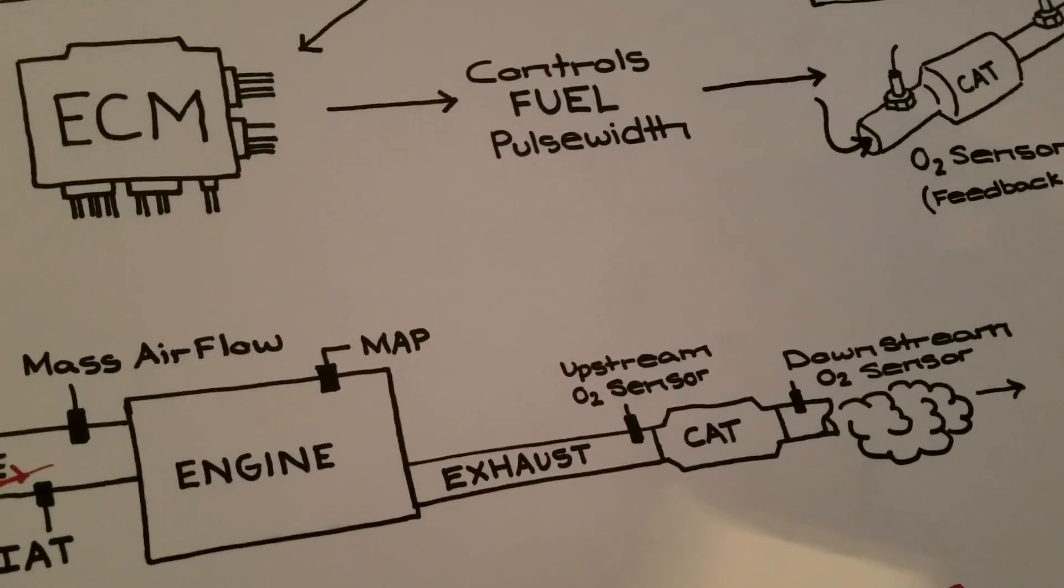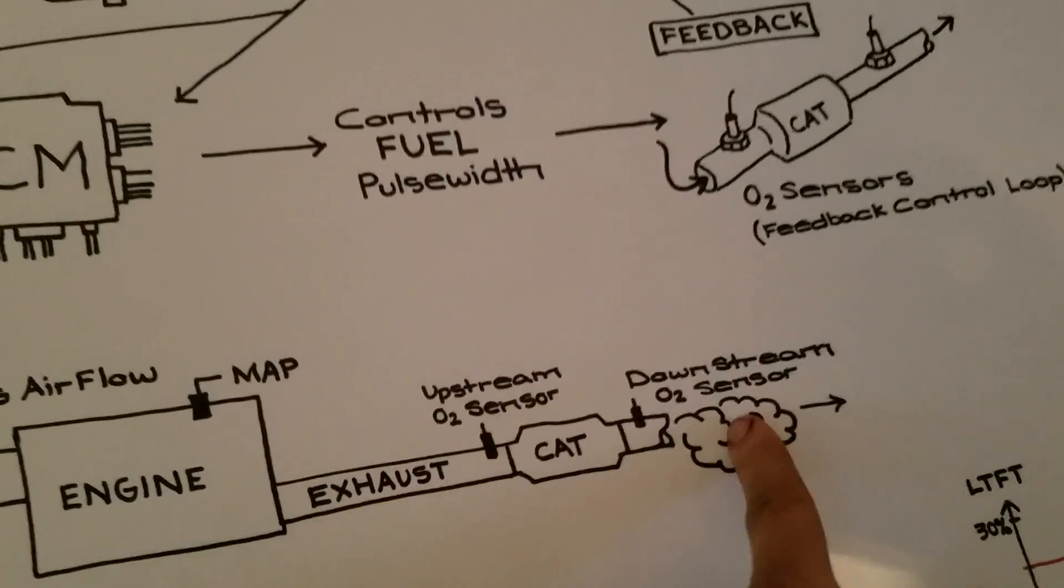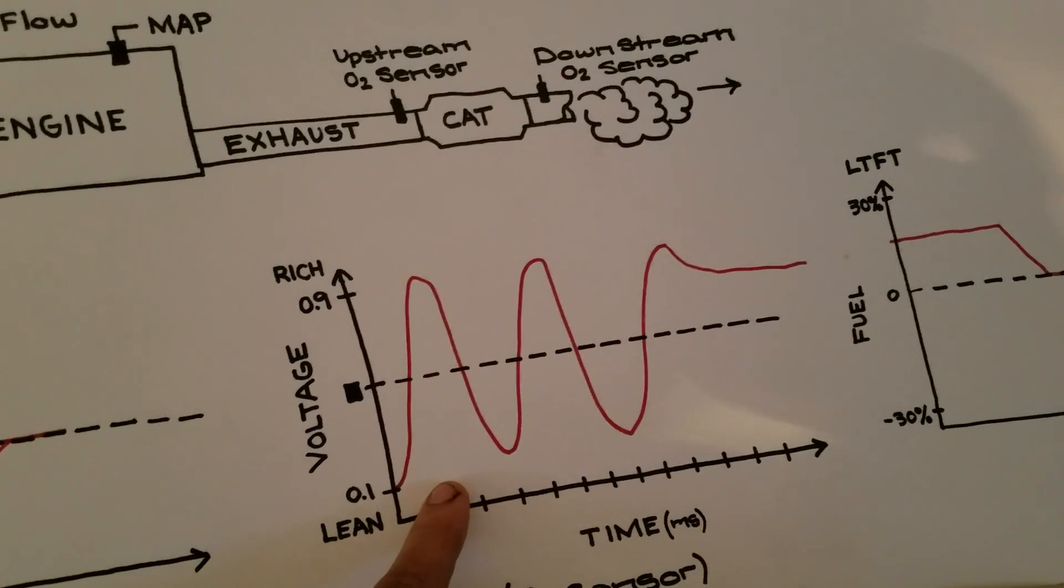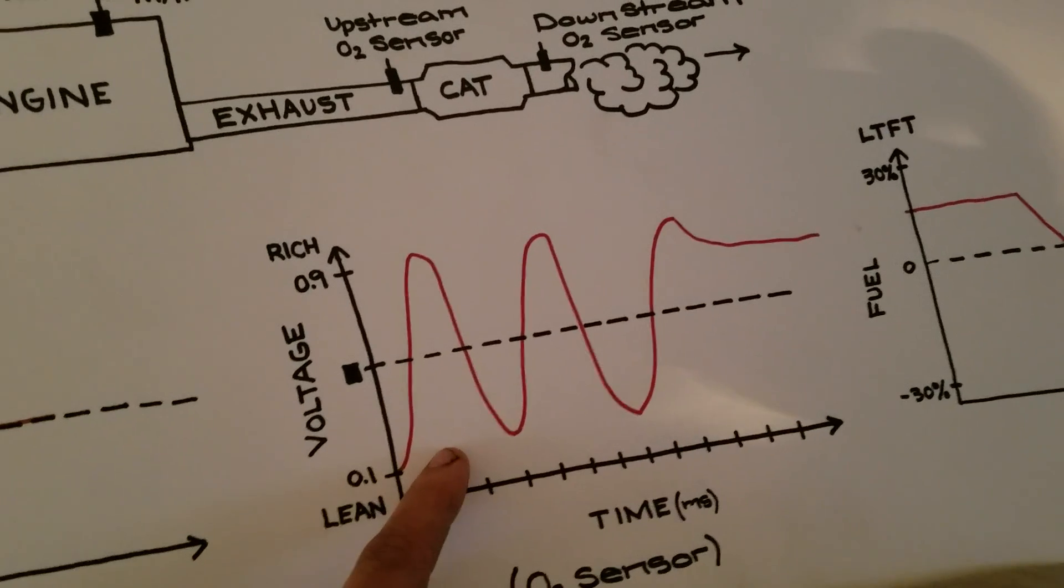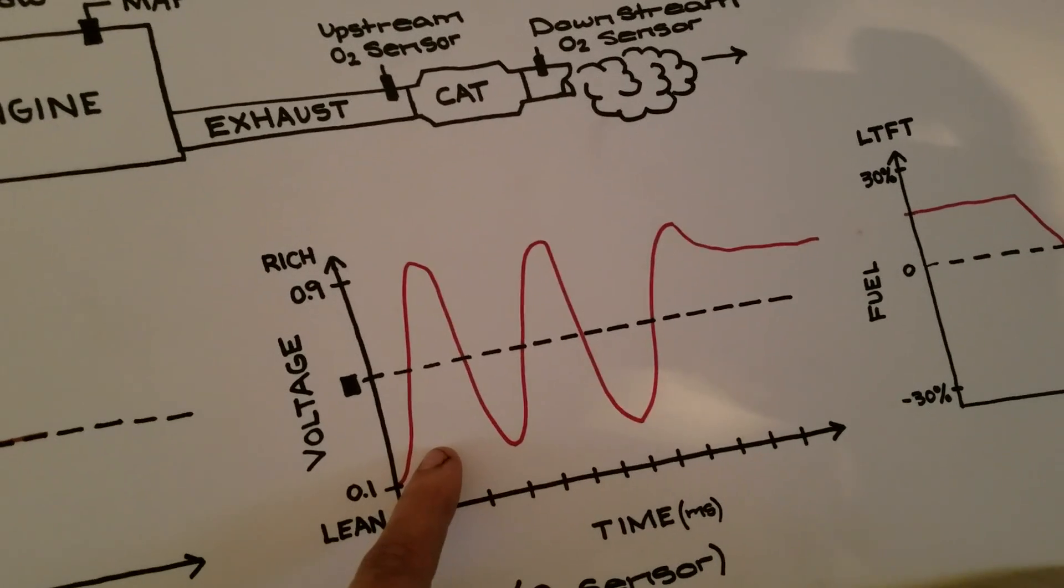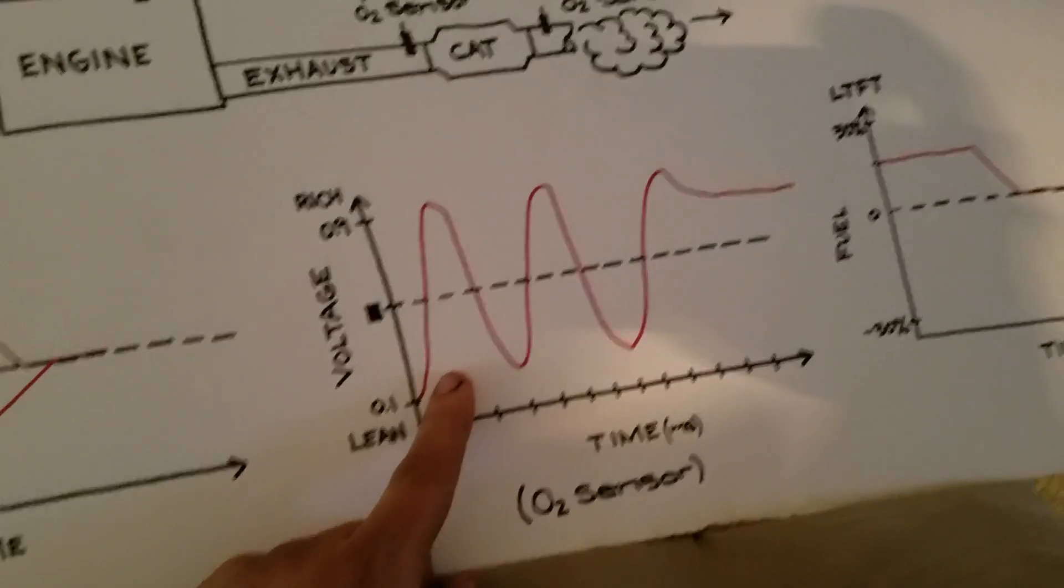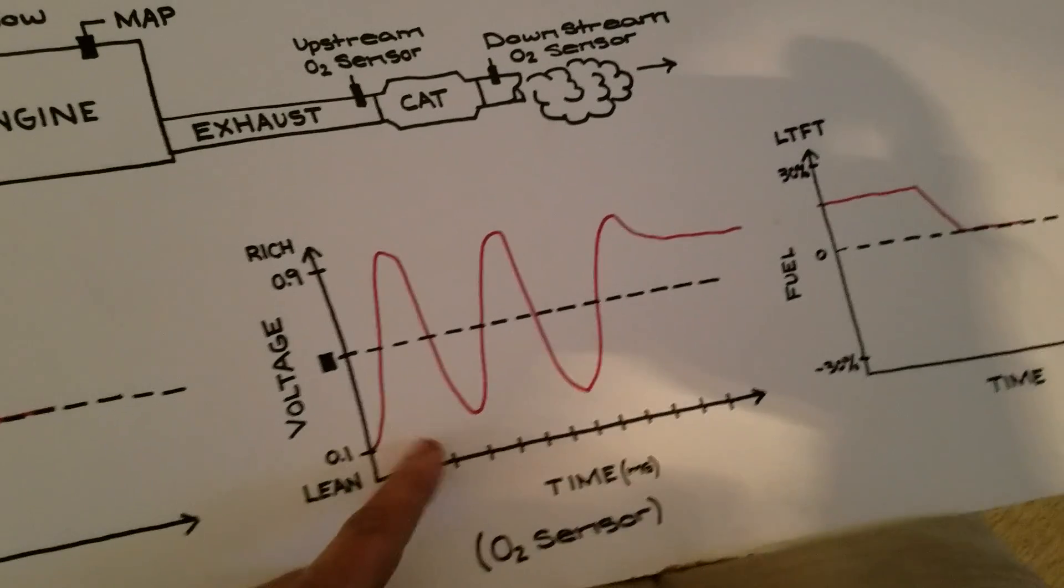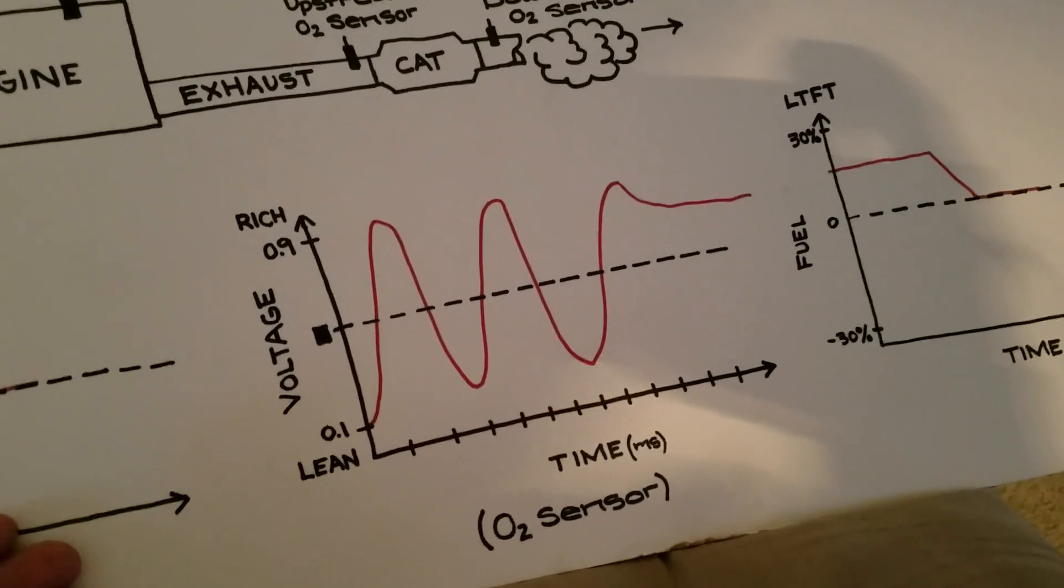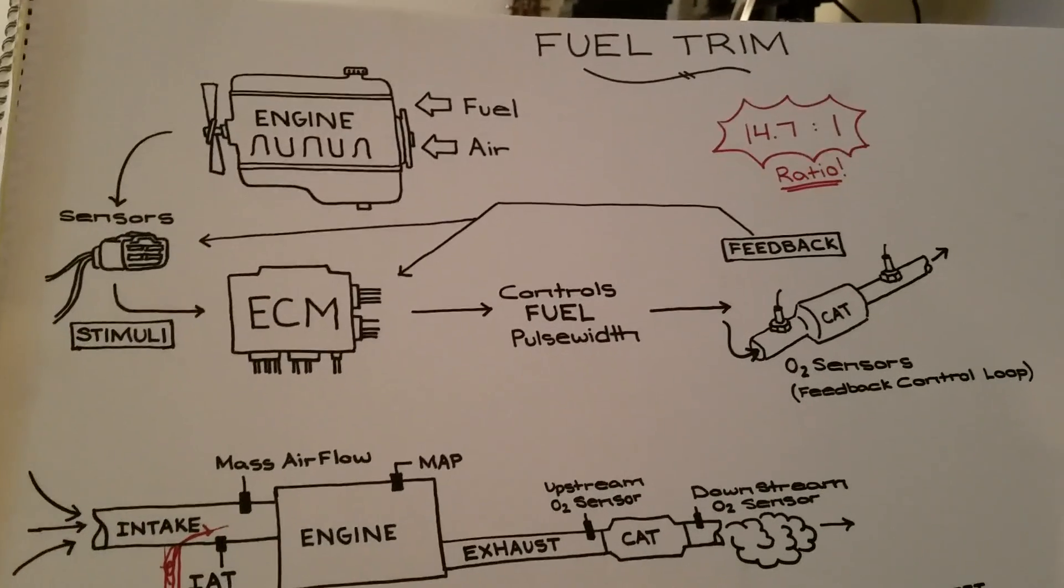And then, once it starts getting reliable feedback from these sensors, that's when it starts going to the live feedback from the sensors. Now, it does the same thing when the sensor fails. If the O2 sensor has failed completely, then the engine is going to automatically go to its pre-programmed values and it's going to run extremely rich until the problem is fixed, which unfortunately can cause a no start or very, very poor operation, and you will know. So that's kind of a basic overview of fuel trim.